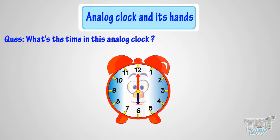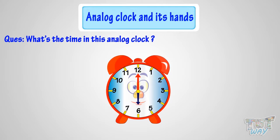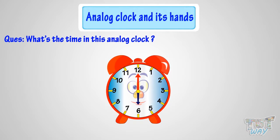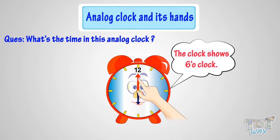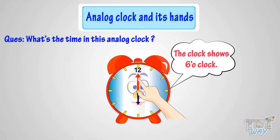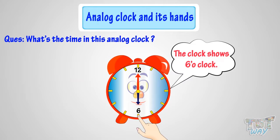Can you tell me what's the time in this analog clock? Let me help you do that. The clock shows 6 o'clock. When the minute hand is at 12, it is time to the hour. But to which hour? The hour hand tells the hour. As the hour hand is pointing at 6, it's 6 o'clock.